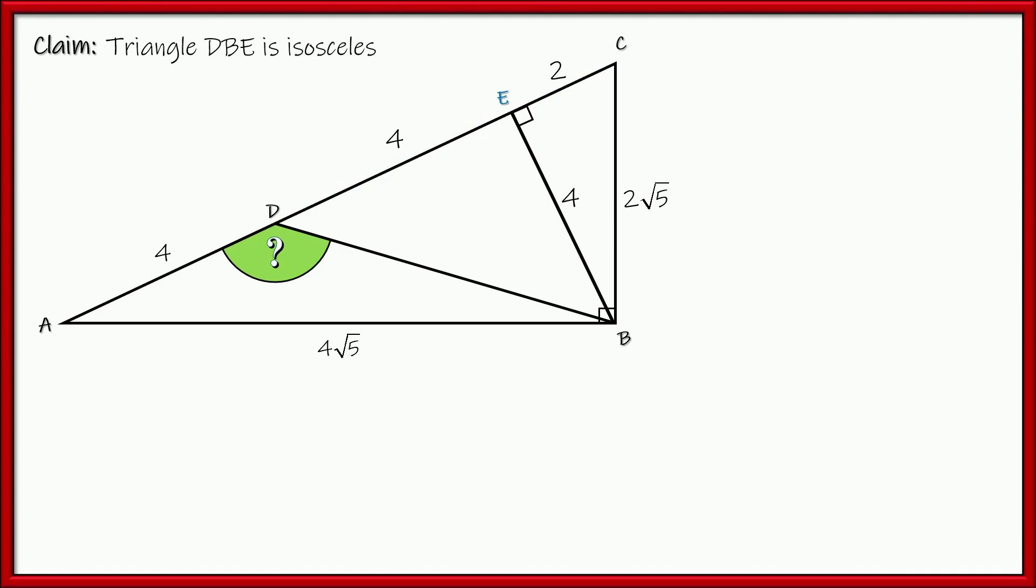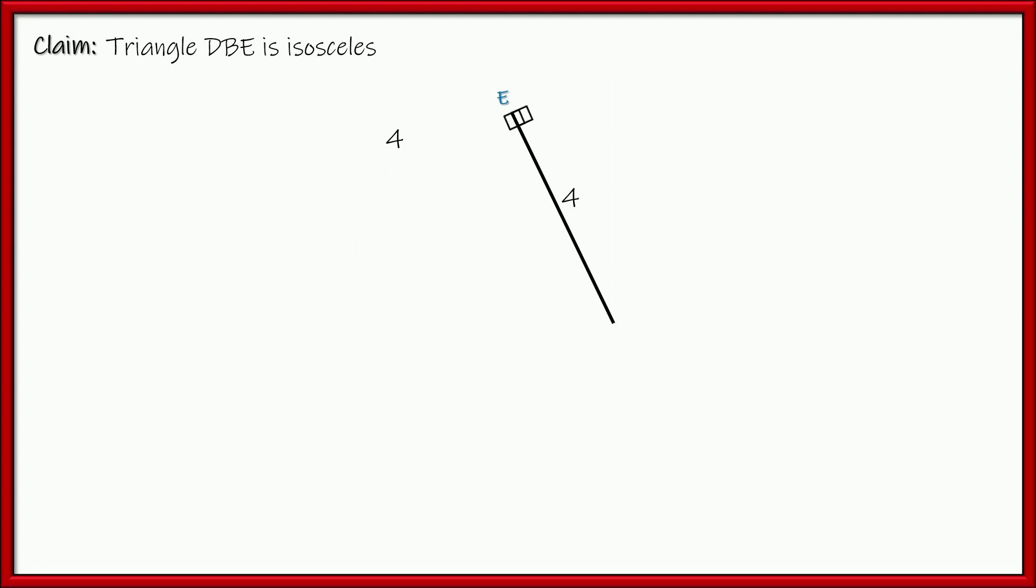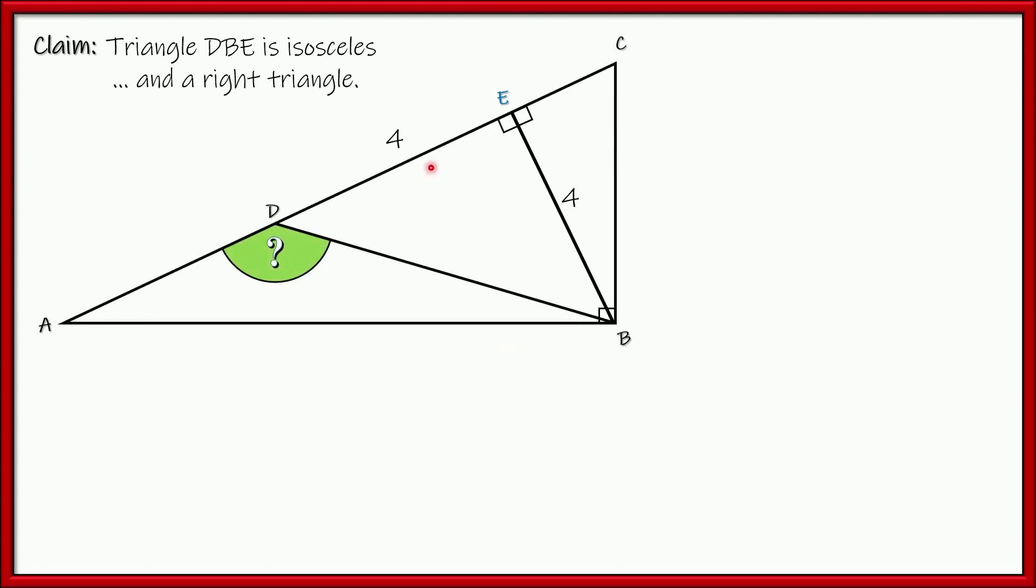Now, check this out. I've got an isosceles triangle right here. DEB is an isosceles triangle because they're both sides of 4. It's a right triangle, meaning that these last two angles right here must be 45 degrees. Right? And since 45 degrees and angle ADB are a straight line, they form a straight line. They make 180. I can just subtract and see that 135 degrees is the measurement of the angle without using any trig.